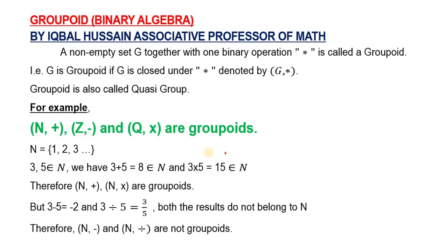Similarly, natural numbers with multiplication also form a groupoid. However, if we take two negative numbers or add them by negative values, the value of the natural number is not in the set, therefore this structure is not a groupoid.